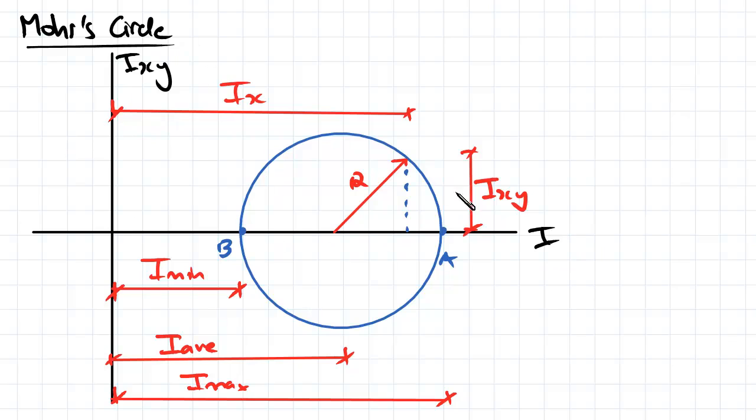As I mentioned in one of the last videos, as we vary the angle of our axes we'll get to a point which is called the principal axes. Principal axes are always separated by 90 degrees, and at the principal axes we have no product second moment of area.